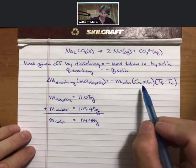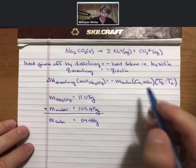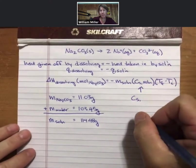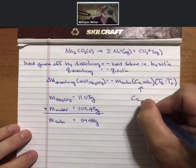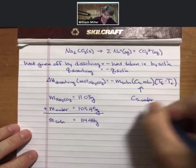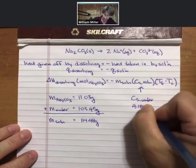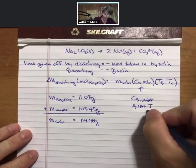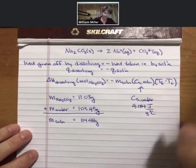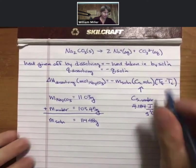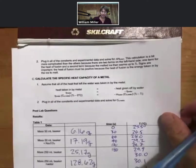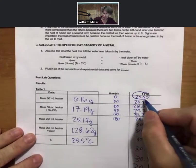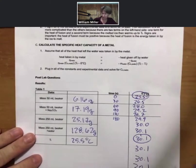For the specific heat capacity of the solution, we're going to assume it's the same as the specific heat capacity of water: 4.184 joules per gram degree Celsius. So we have those two values. Looking back at the data, the initial temperature is 25.5 degrees Celsius.